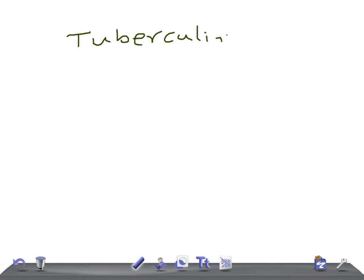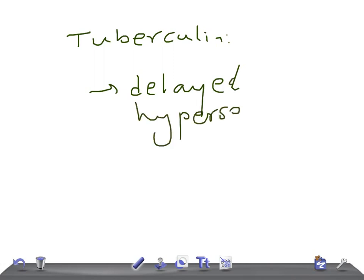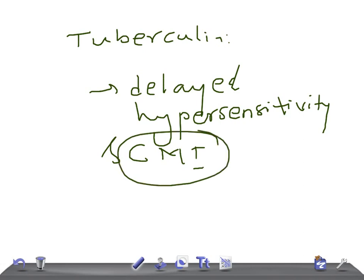Tuberculin is a surface protein. Along with mycolic acid, it causes delayed hypersensitivity and cell-mediated immunity (CMI). For examinations, remember that granulomas and caseation — which are hallmarks of tuberculosis — are mediated by CMI. Tuberculin is responsible for these responses.